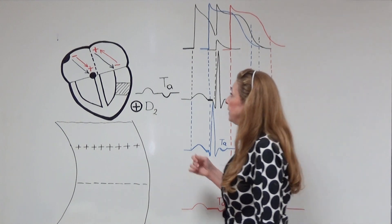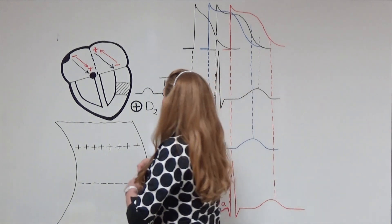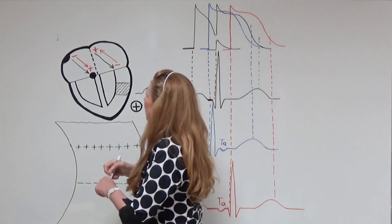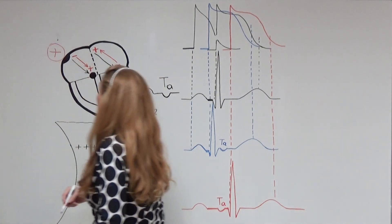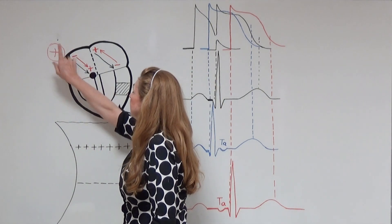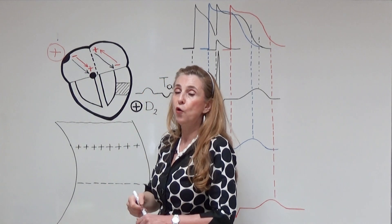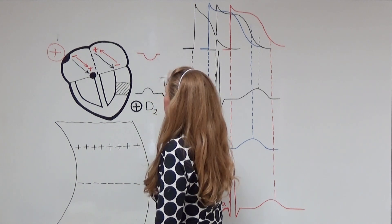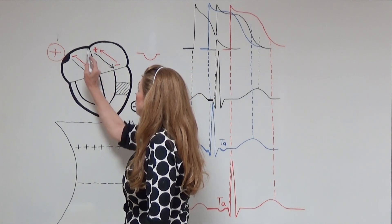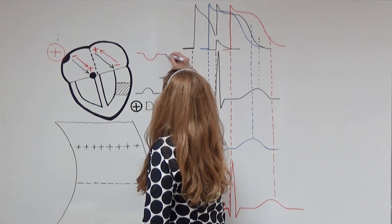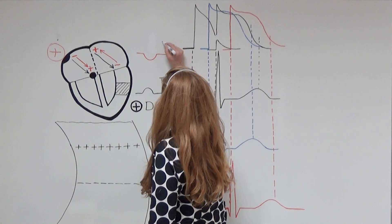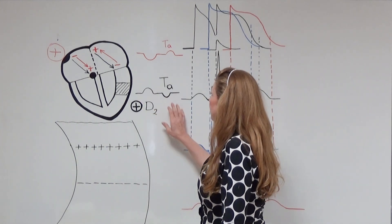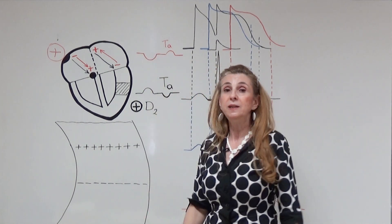Before finishing, I want to talk about one last point. Our D2 electrode on the frontal plane was at 60 degrees and recorded a positive P and a negative TA. What if we had an electrode like AVR on the other side? In that case, the positive electrode would see the negative end of the depolarization vector and record a negative P wave. During repolarization, the electrode would be close to the positive end, recording a positive TA wave. So when you have a positive P, TA is negative; when you have a negative P, TA is positive.